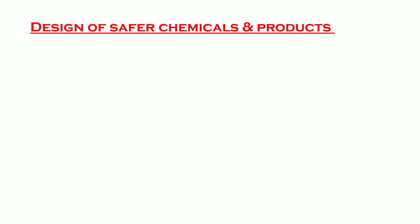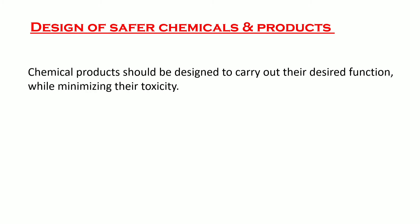The second principle is design of safer chemicals and products. Chemical products should be designed to carry out their desired function while minimizing their toxicity. This means a product should be designed to be used for its purpose while having the greatest possible efficiency with the lowest amount of toxicity to the user, the earth, etc.